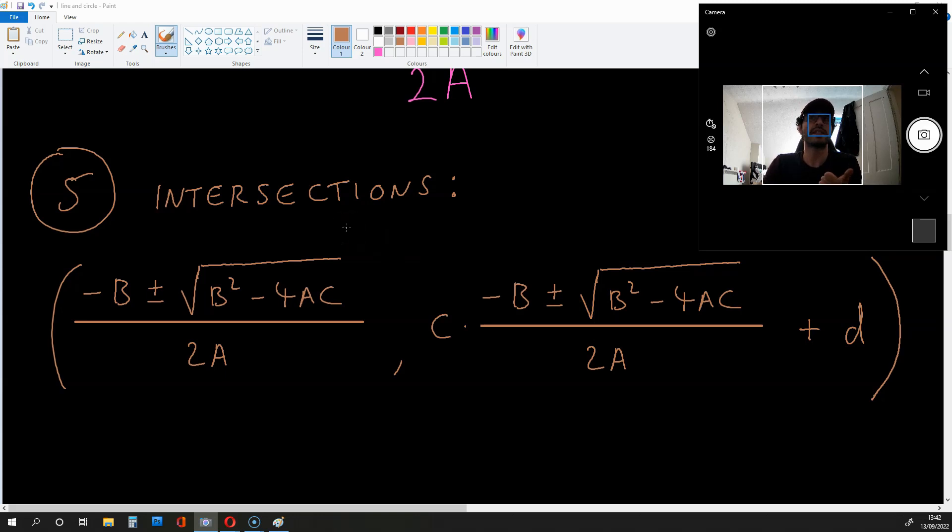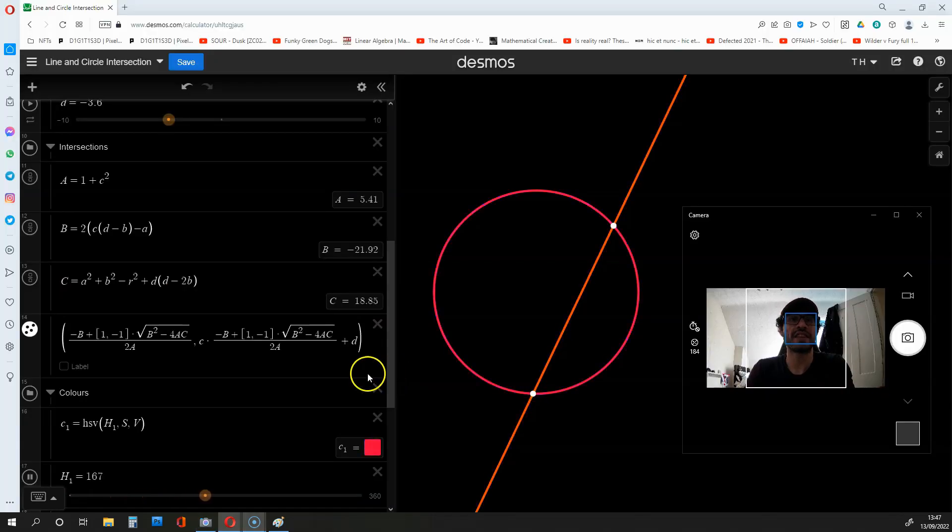The coordinates for the intersections are going to look like this. This is the small x, and these are the y coordinates. Let's have another look at the Desmos graph to see what I mean. A has been replaced by this, B has been replaced by this, and C has been replaced by this.